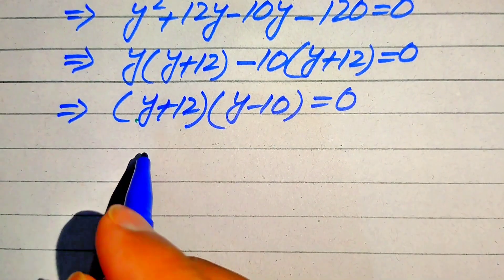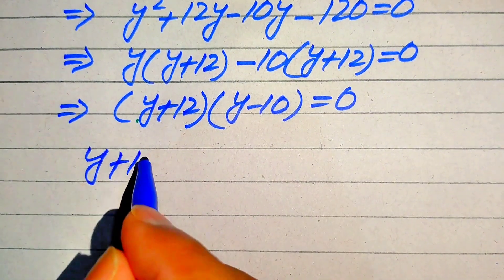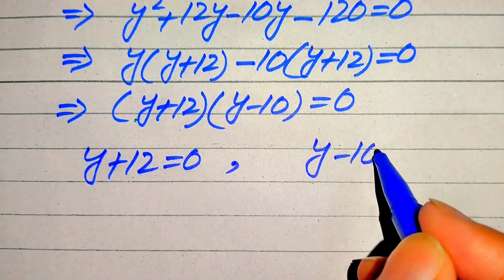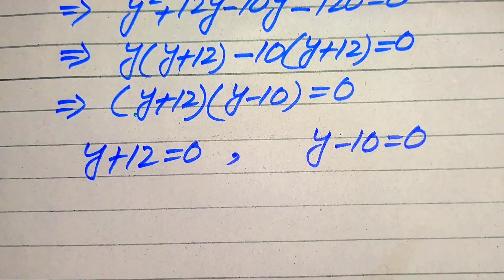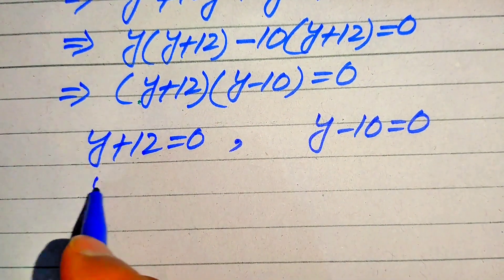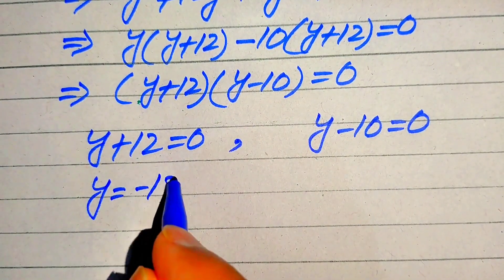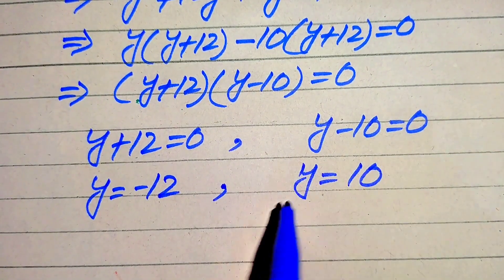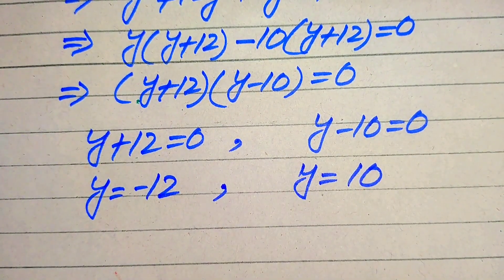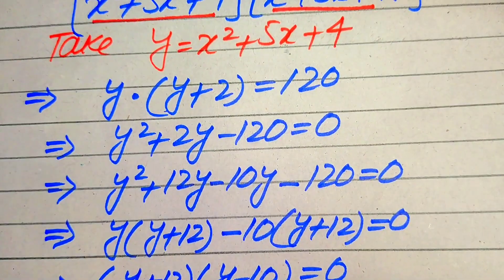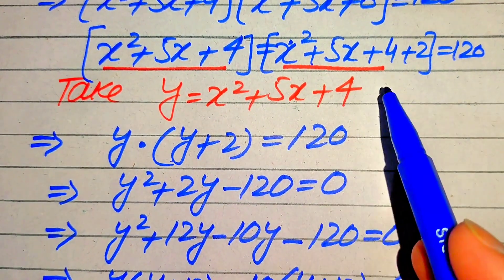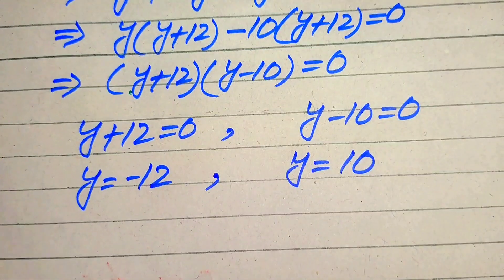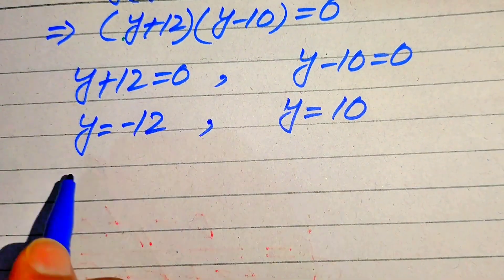We break into two cases: y + 12 = 0 giving y = −12, and y − 10 = 0 giving y = 10. Now we move backward and back-substitute the value of y — we need to put each value of y into x² + 5x + 4.